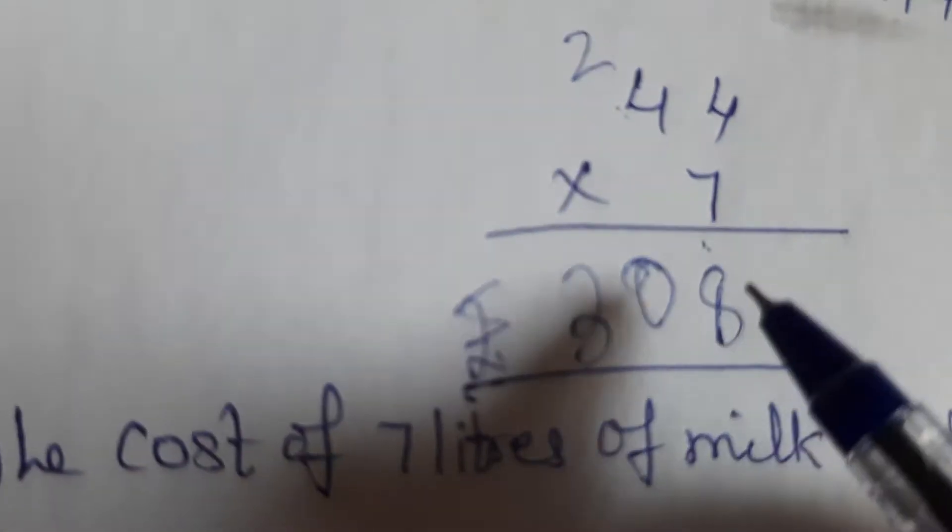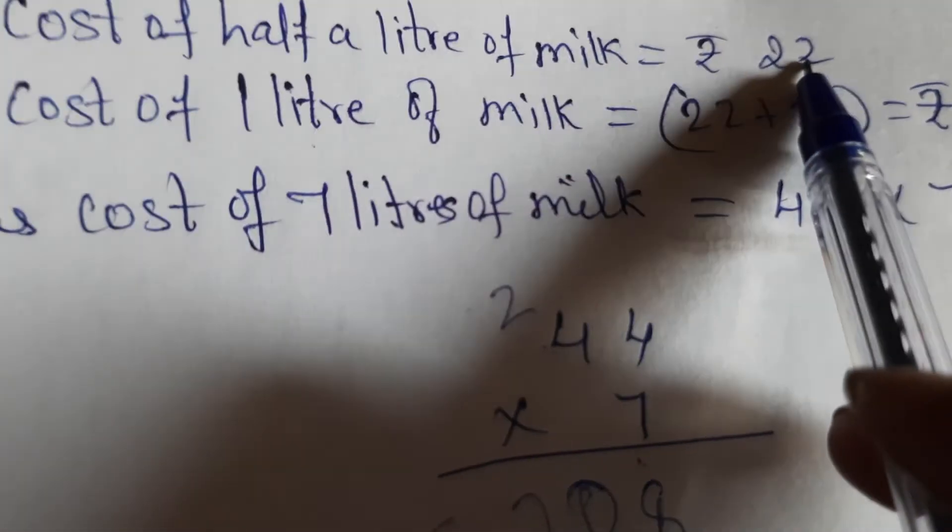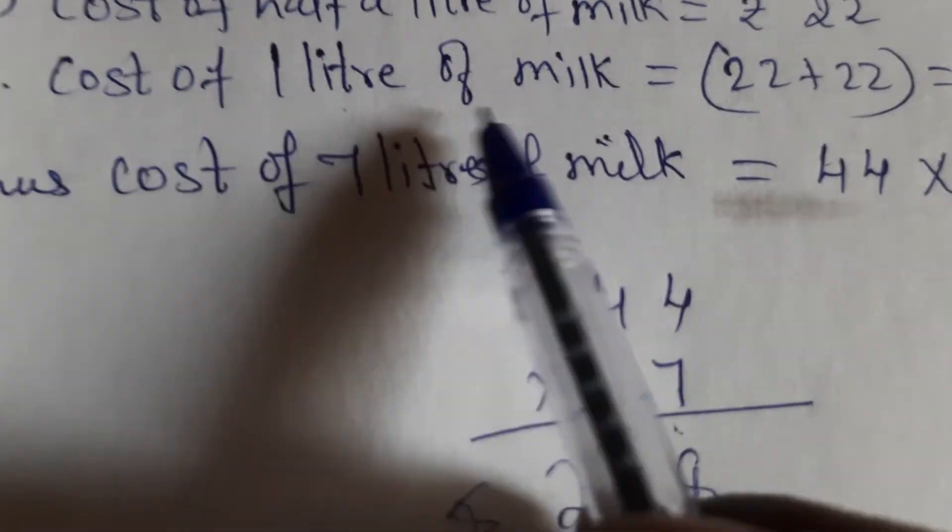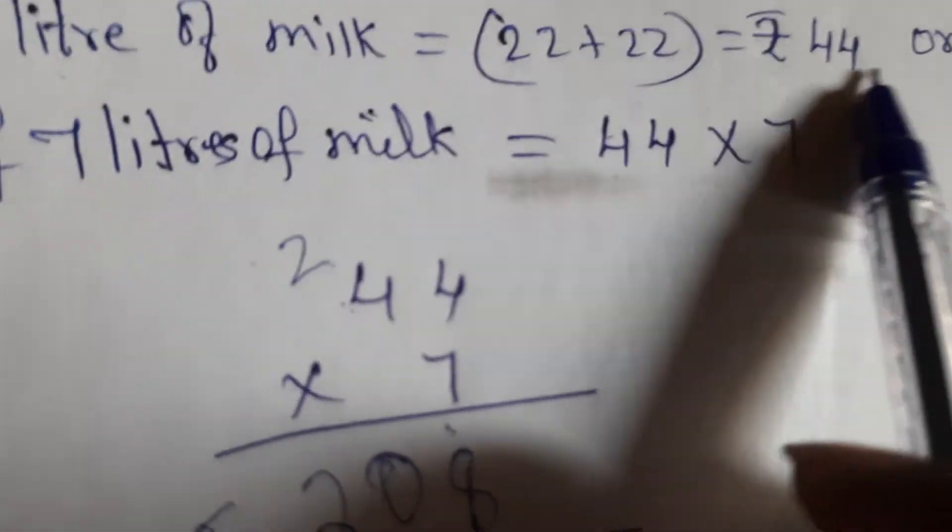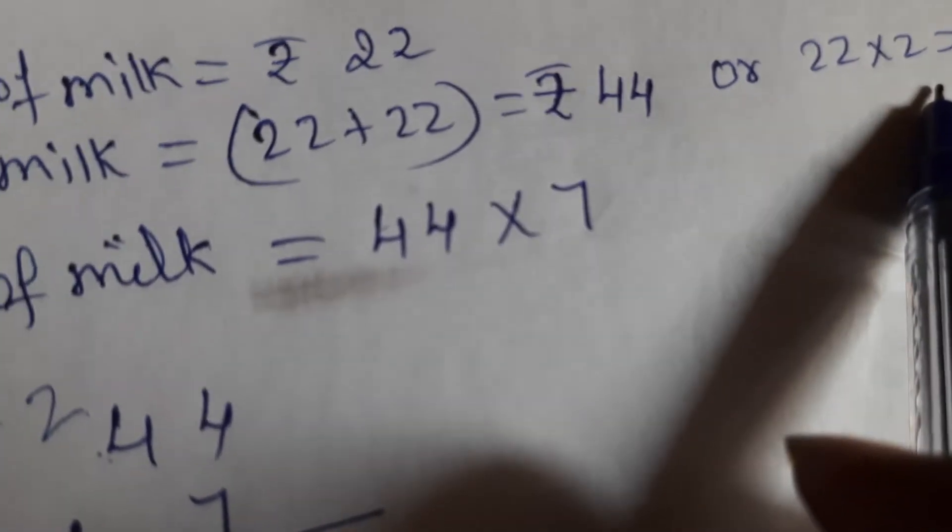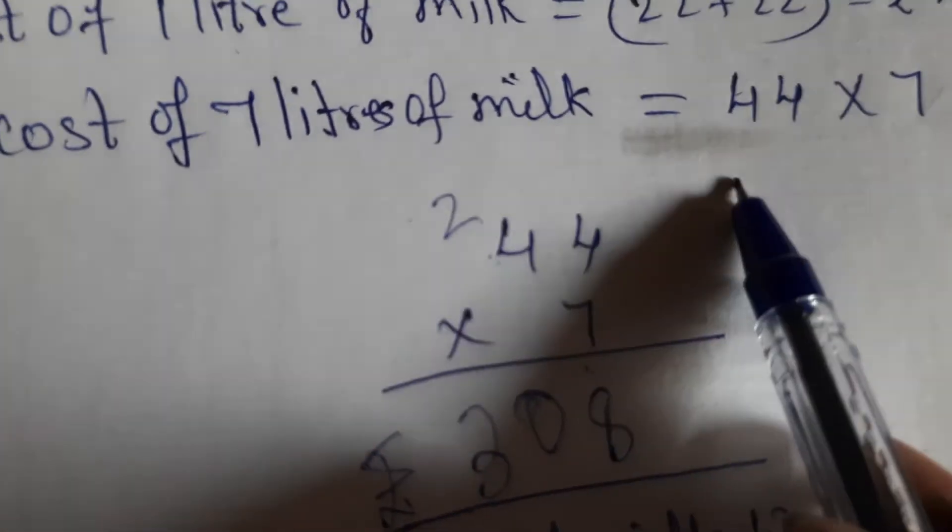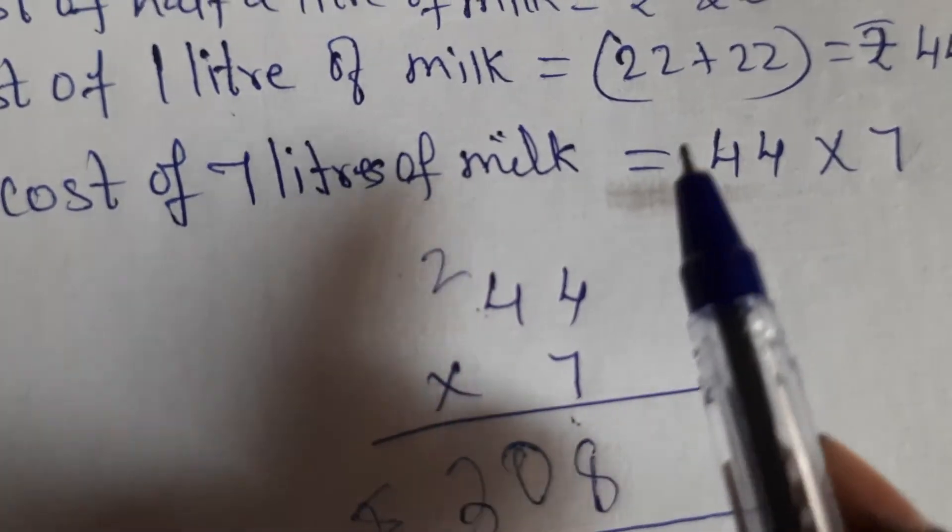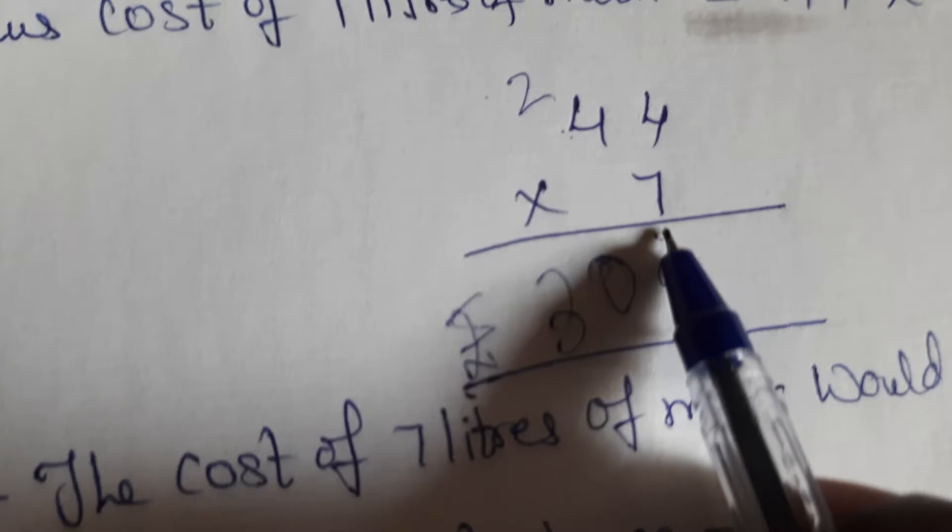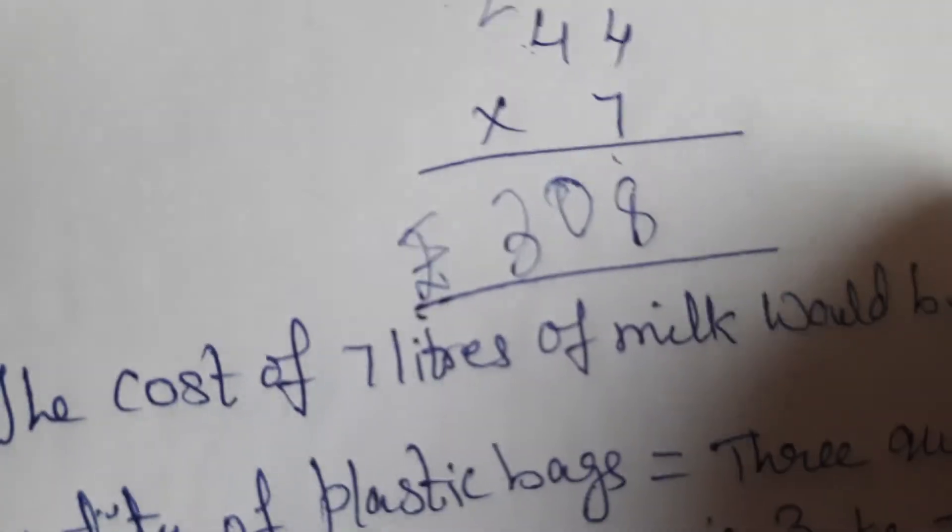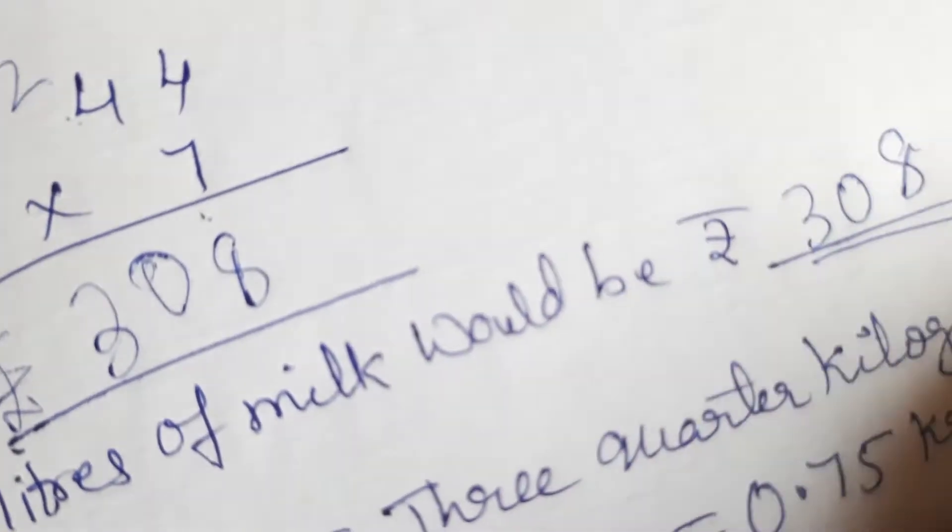So how much will 7 liters cost us? So once more I am repeating. Cost of half a liter of milk is given to us that is 22 rupees. So first we will have to find out cost of 1 liter of milk. That is either you double it 22 plus 22 gives us rupees 44 children or you multiply 22 into 2. That is 44. Okay. So cost of 7 liters of milk when we have to find out we will have to multiply by 44. Okay. Because 1 liter is costing 44. So 7 liters will be costing multiplied by that. So 44 into 7 is 308. So the cost of 7 liters of milk would be 308 rupees.